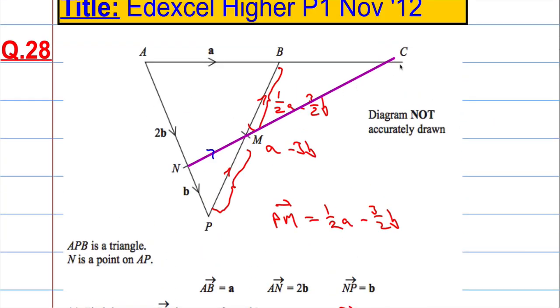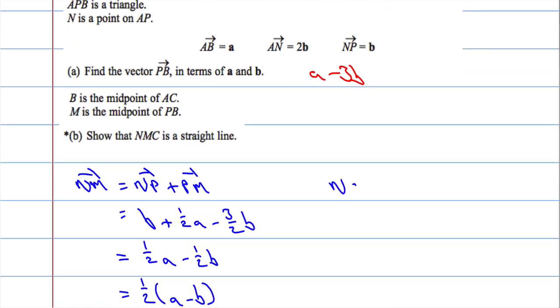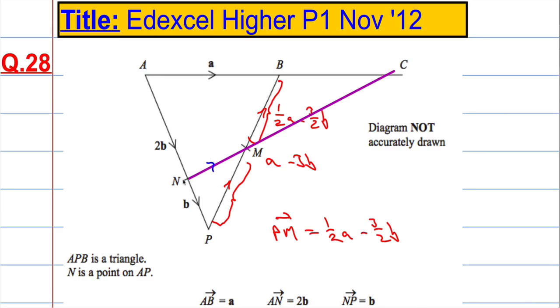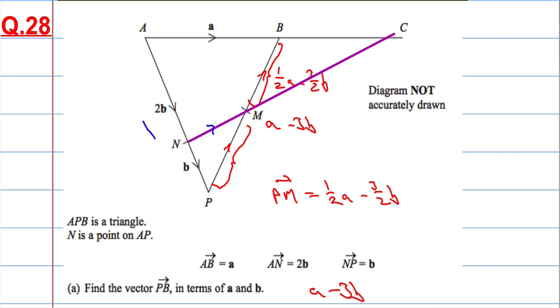Let's see what the vector NC will be. So NC, to get from N to C, I would have to go NA, from N to A. So I'm going in this direction, and then from A all the way over to C.